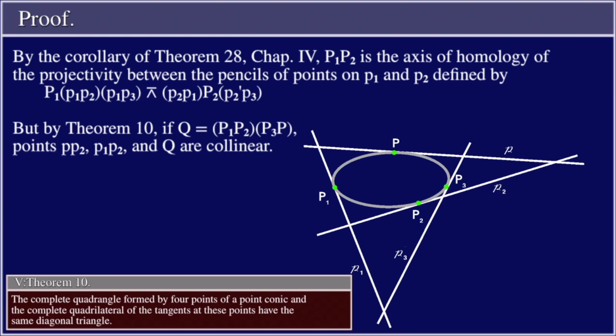By the corollary of Theorem 28, Chapter 4, P₁P₂ is the axis of homology of the projectivity between the pencils of points on P₁ and P₂, defined by: P₁(P₁P₂, P₁P₃, P) is projective with P₂(P₁P₂, P₂P₃, P). If Q equals (P₁P₂, P₃P), the points P, P₂(P₂P₁, P₃), and Q are collinear.